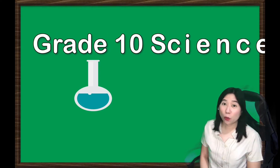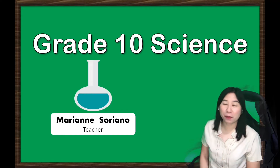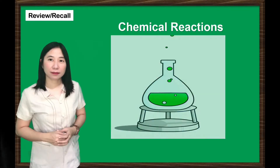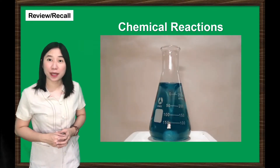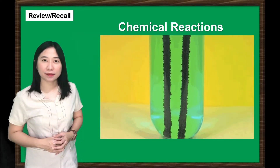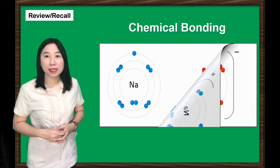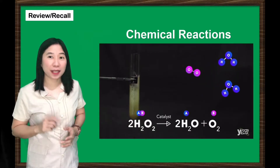Hello students! Welcome to grade 10 science lesson, and I'm your teacher, Mom Marian Soriano. In your lower grade science lessons, you have learned about chemical reactions. You've seen the color changes of an indicator when tested with acids and bases, or tested the reactivity of some metals. You've also learned in chemical bonding that atoms can gain stability if they lose or gain electrons. Let us learn more about chemical reactions in today's lesson.